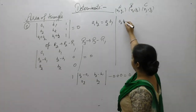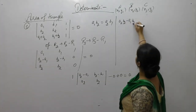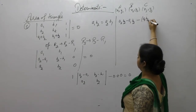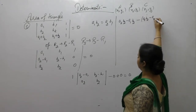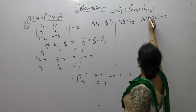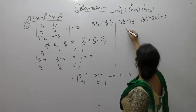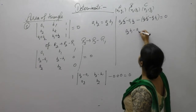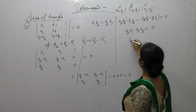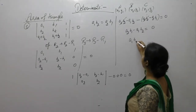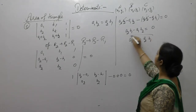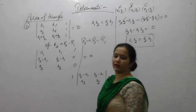So a2·b2 - a1·b2 - a2·b1 + a1·b1 = 0. The a1·b1 and a2·b2 terms cancel, giving -a1·b2 - a2·b1 = 0, which implies a2·b1 - a1·b2 = 0. Therefore a1·b2 equals a2·b1, which is what we needed to prove.